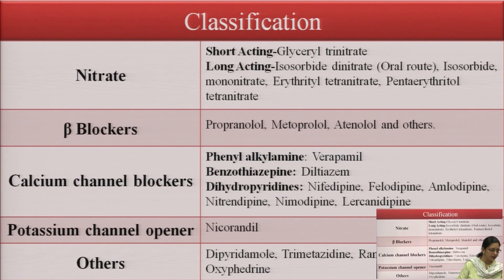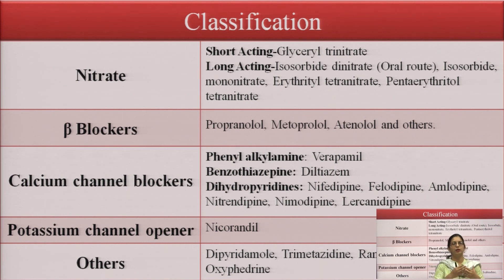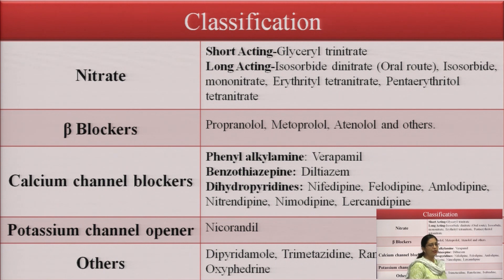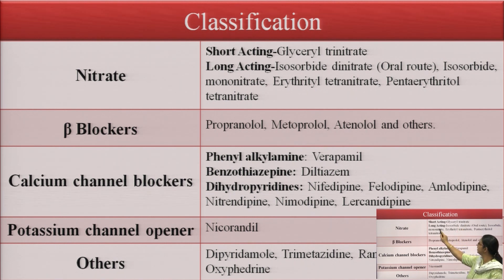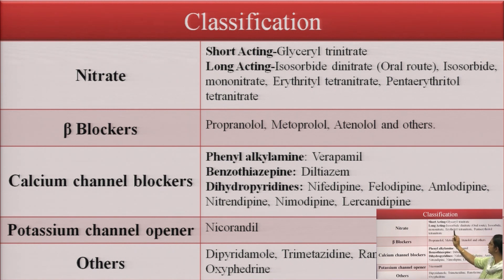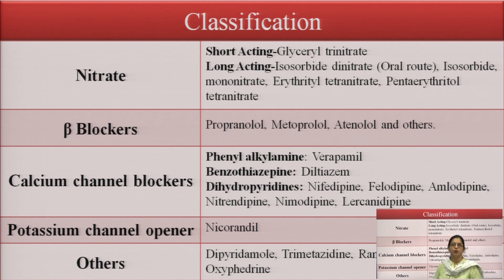Moving to classification of anti-anginal drugs — the first class is nitrates, which are further classified into short-acting and long-acting. The example of a short-acting nitrate is glyceryl trinitrate. Long-acting examples include isosorbide dinitrate (oral route), isosorbide mononitrate, erythrityl tetranitrate, and pentaerythritol tetranitrate.